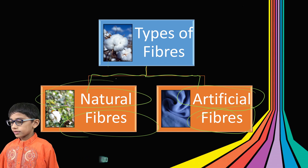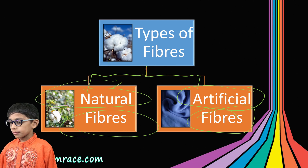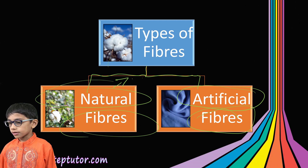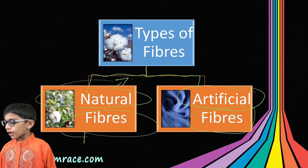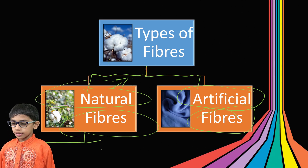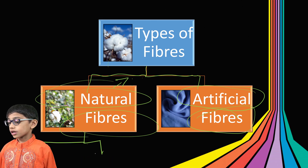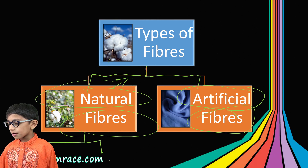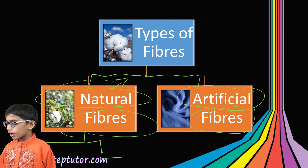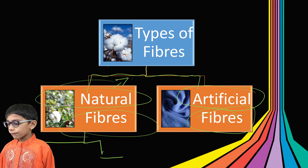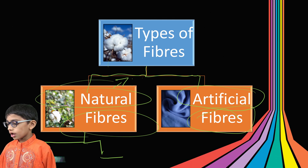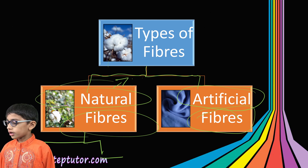Natural fibers include cotton, jute, and silk. Natural fibers are also categorized into two categories: animal fiber and plant fiber. Plant fibers include jute and cotton.